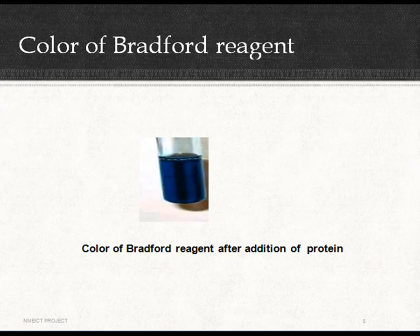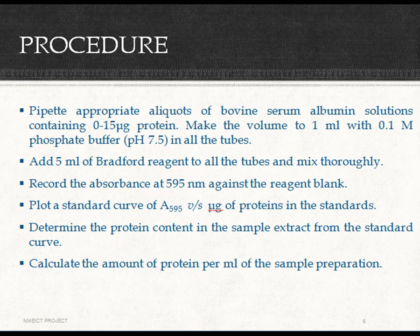The procedure involves pipetting aliquots of bovine serum albumin solution containing 0 to 15 micrograms of protein, then making the volume up to 1 ml with 0.1 molar phosphate buffer in all tubes. Add 5 ml of Bradford reagent to all tubes and mix thoroughly. Record the absorbance at 595 nm against the reagent blank, then plot a standard curve of absorbance at 595 nm versus micrograms of protein.